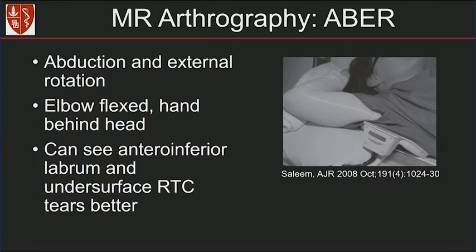An ABER sequence may be added to your MR arthrography protocol. This is imaged when the shoulder is held in abduction external rotation. The elbow is flexed with the hand behind the head, as you can see on this picture of the patient supine. There's the coil. This allows us to see the anterior inferior labrum really well and undersurface rotator cuff tears.